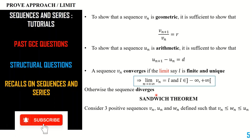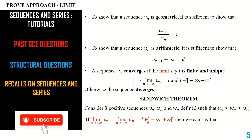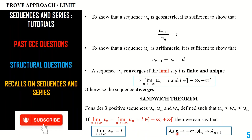Let's look at the Sandwich Theorem. If you have three sequences VN, UN, and WN such that WN lies between VN and UN, and the limit of VN equals the limit of UN (finite and unique), then the limit of WN is that same limit. Essentially, if WN is bounded by two sequences with the same limit, WN has that limit too. An important related point: as N tends to infinity, the limit of sequence AN equals the limit of sequence A(N+1).